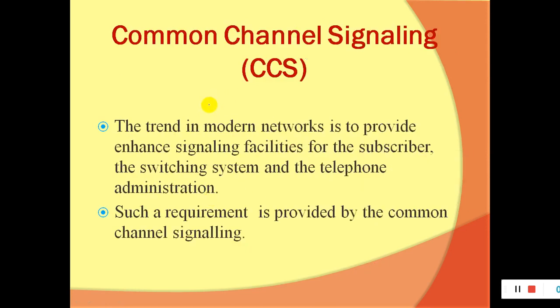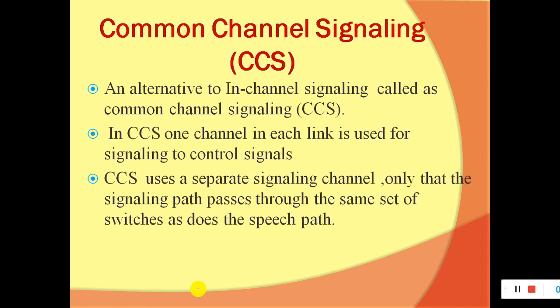The trend in modern networks is to provide enhanced signaling facilities for the subscriber, the switching system, and the telephone administration. CCS — Common Channel Signaling — is the modern signaling system which brought a revolution in the telecom system. It is provided to enhance signaling facilities for the subscriber, for the switching system as a whole, and for telephone administration as well. This requirement is fulfilled by common channel signaling, which is an alternative to in-channel signaling.